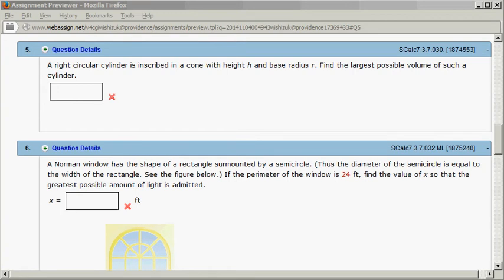Okay, let's look at Hallmark 3.7 problem number five. We have a right circular cylinder inscribed in a cone with height h and base radius r. Find the largest positive volume of such a cylinder. Alright, so let's do that.